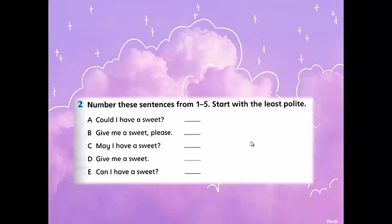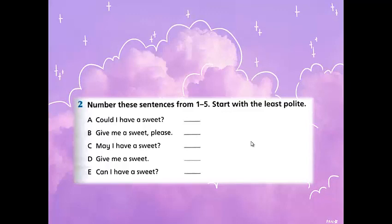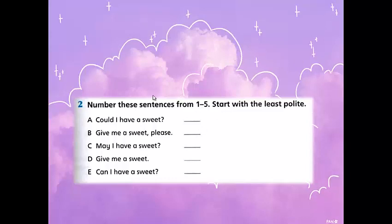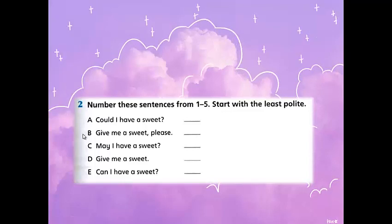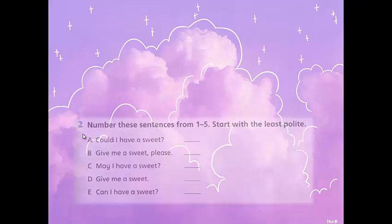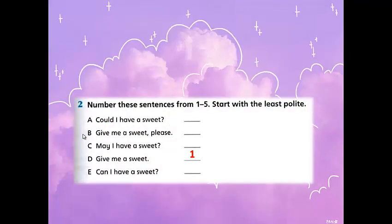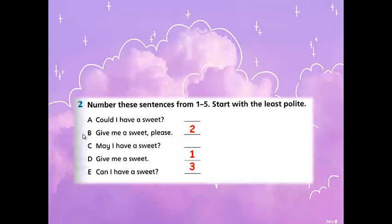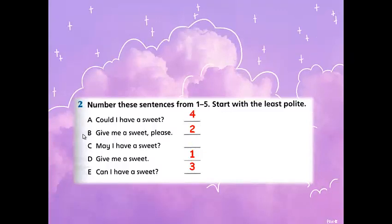Now exercise number two: number these sentences from one to five, starting with the least polite, so we are going from the most informal to the most formal. Let's read the sentences: (a) 'Could I have a sweet?' (b) 'Give me a sweet please.' (c) 'May I have a sweet?' (d) 'Give me a sweet.' (e) 'Can I have a sweet?' So: number one is (d), number two is (b), number three is (e), number four is (a), and the most formal — number five — is (c). Excellent, good job!